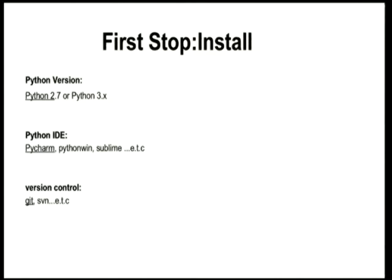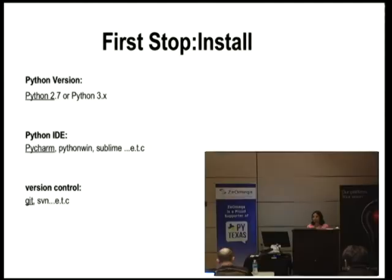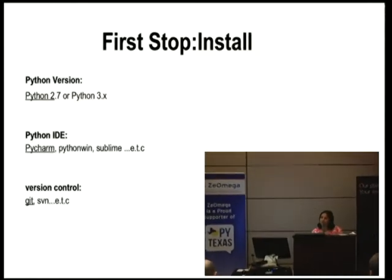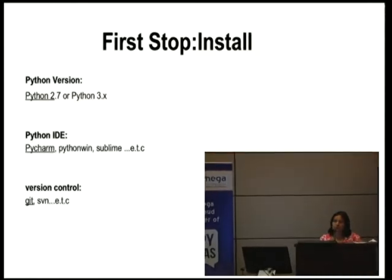First up, starting with Python would be to install Python. At that point, you will have to make a choice of the version you're going to build on. You can support both versions, Python 2 and Python 3. But if you're a beginner, I would suggest choose one. It would seem like we should go with Python 3 because Python 3 is where the new releases and new features will be.